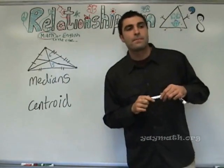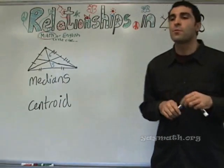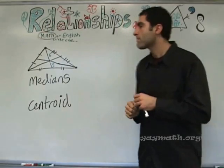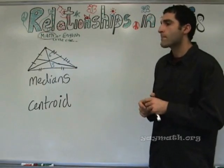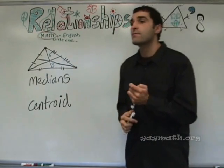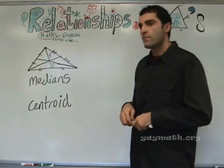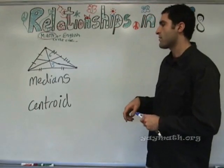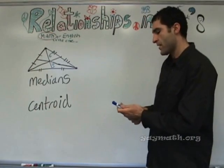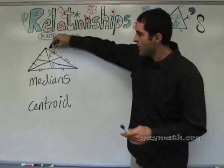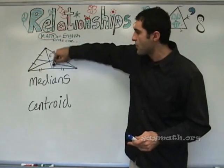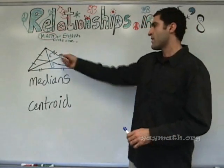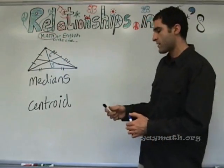What if it's in an equilateral? It would work for every triangle — it's the same thing. So the centroid is where the medians intersect. That's the centroid where the medians intersect. This two-thirds relationship — I'm not going to hold you to it, but I'm just letting you know it exists.